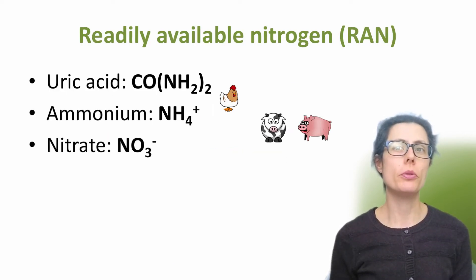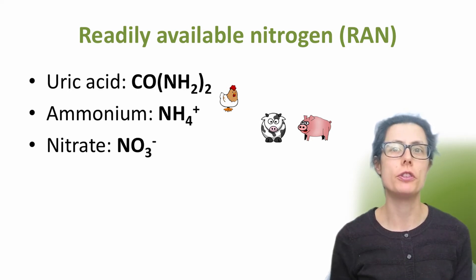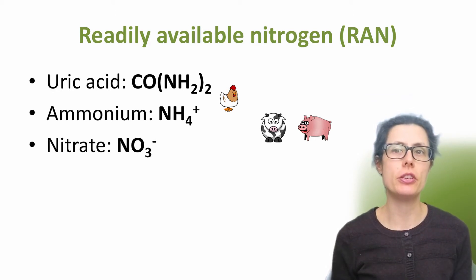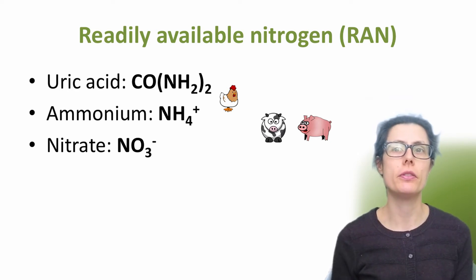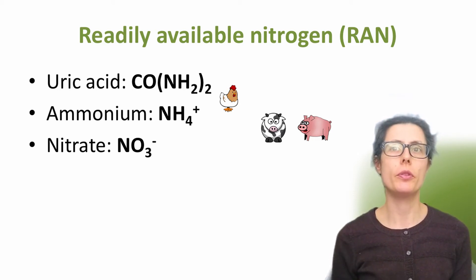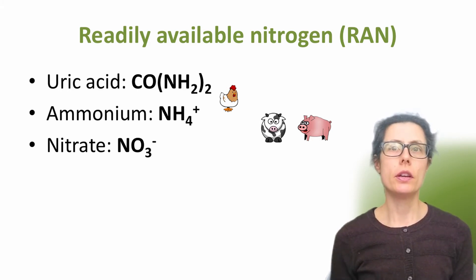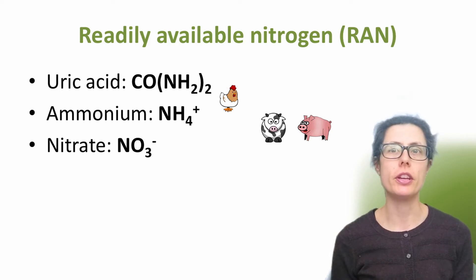Ammonia emissions from organic manures come initially from the readily available nitrogen within them, often abbreviated to RAN. RAN is the nitrogen that is potentially available for rapid crop uptake. The three main RAN compounds are uric acid, ammonium and nitrate. The uric acid is only found in poultry manure. Ammonium is the main readily available nitrogen source in animal manures and slurries and digestates.